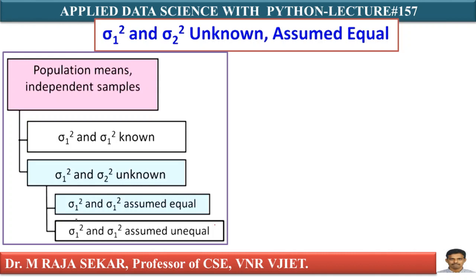There is another case where Sigma1 square and Sigma2 square are assumed unequal — I will discuss that in coming lectures. In this lecture, we will assume Sigma1 square and Sigma2 square are equal. The first assumption is they are unknown and we are assuming they are equal.